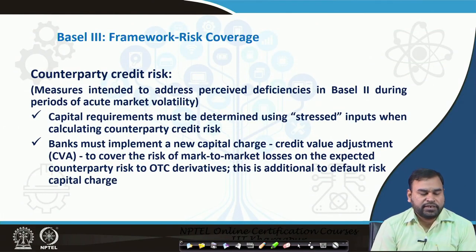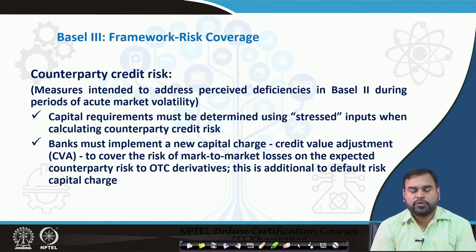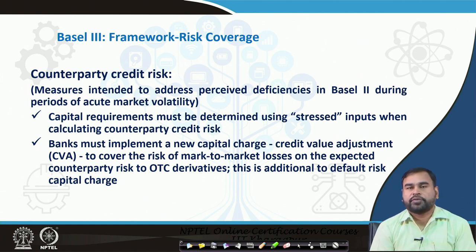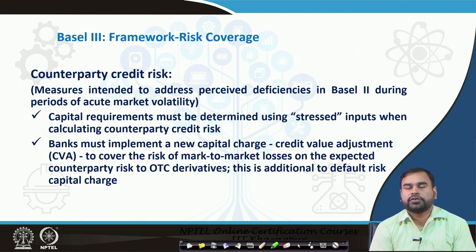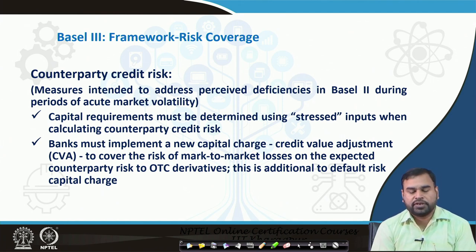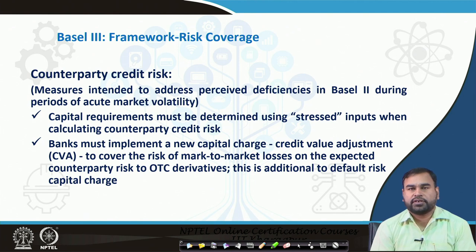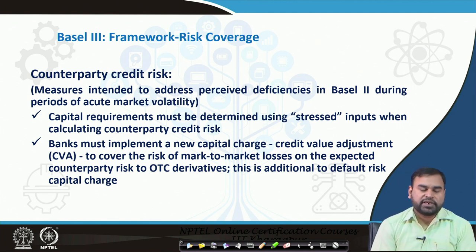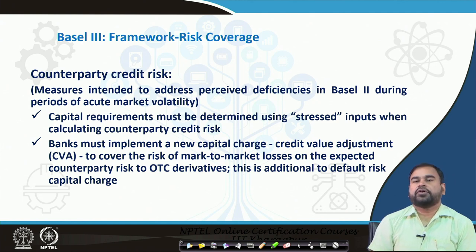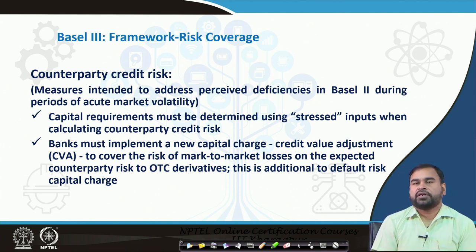There is also the counterparty credit risk, which addresses the perceived deficiencies in Basel 2 during the period of acute market volatility. Capital requirements must be determined using stressed inputs when calculating counterparty credit risk — it will be considered in stressed conditions, not just normal conditions. The banks must implement a new capital charge called the credit value adjustment charge to cover the risk of mark-to-market losses on expected counterparty risk from OTC derivatives, which is basically additional default risk capital charge.